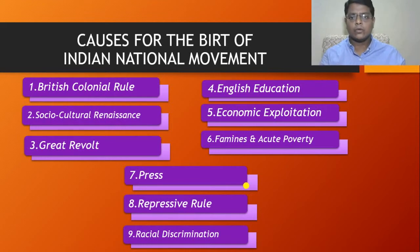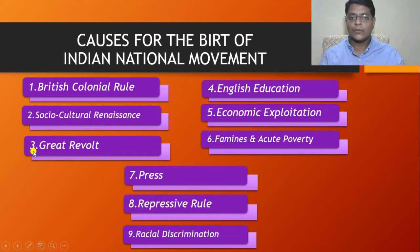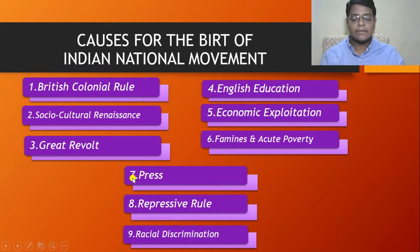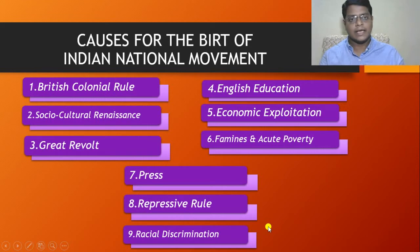The causes for the birth of the Indian national movement at a glance: first, British colonial rule; second, socio-cultural renaissance; third, great revolt; fourth, English education; fifth, economic exploitation; sixth, famines and acute poverty; seventh, press; eighth, repressive rule; ninth, racial discrimination; and also some other causes. Let us try to understand one by one.